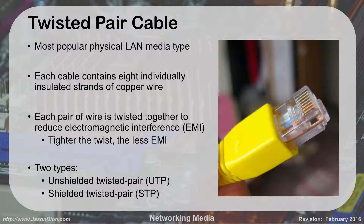In networks nowadays, you're going to find coax generally in your cable modems — it comes into the house to your cable modem. Once it gets to the cable modem, it'll switch to twisted pair cable, which is what we use for most of our networking today.